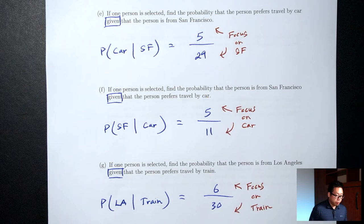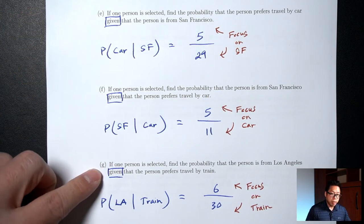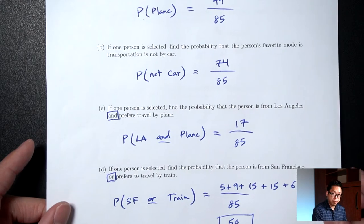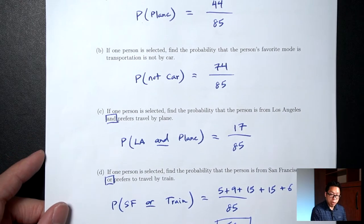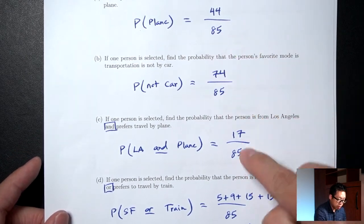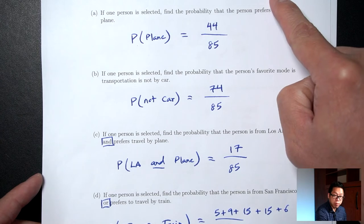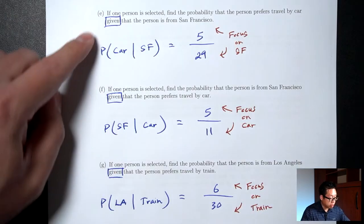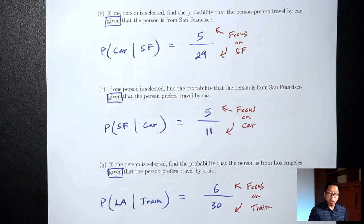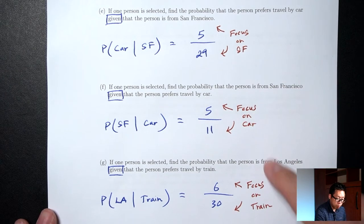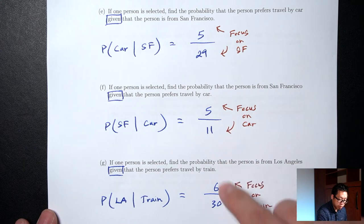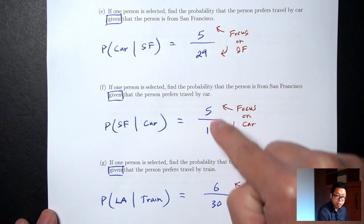As a tip: if you don't see the word 'given,' we're talking about regular probability, and the bottom is going to be the total of everybody. If you do see the word 'given,' that means we're talking about conditional probability, which means we focus on a certain part of the table, and the bottom is not going to be the total of everybody anymore.